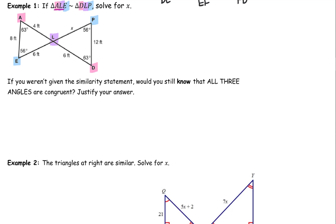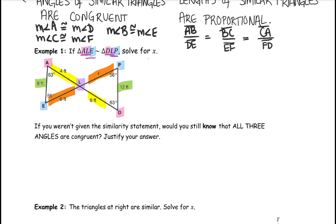Side AL, since A and L are the first two letters, that is going to correspond to side DL. Then your next two letters, LE, those will correspond with LP. And finally, EA — your last and your first letter — will go with PD. Now, I usually like to start with the bigger triangle. If you notice, this green side is bigger than the corresponding green side on the other triangle, so it looks like the one on the right is the bigger triangle.